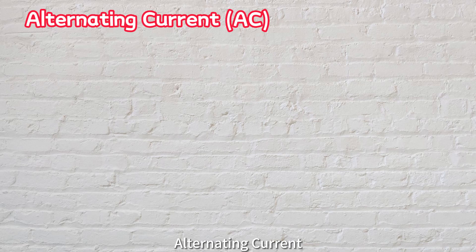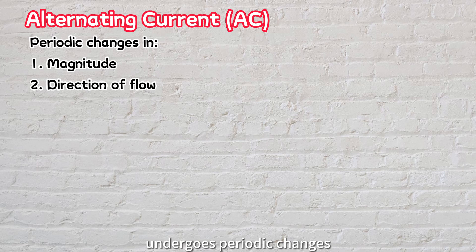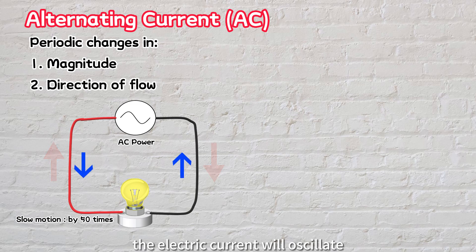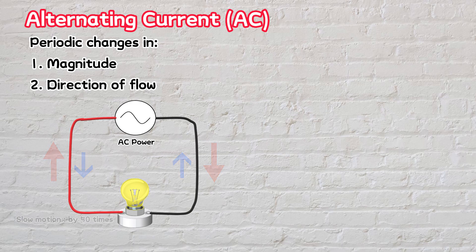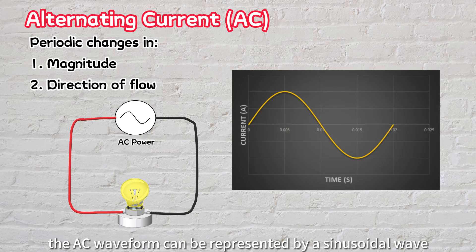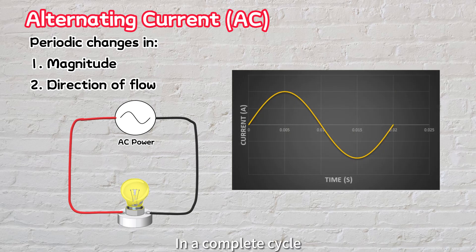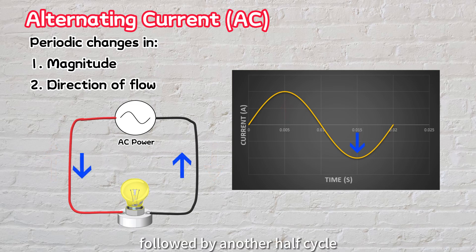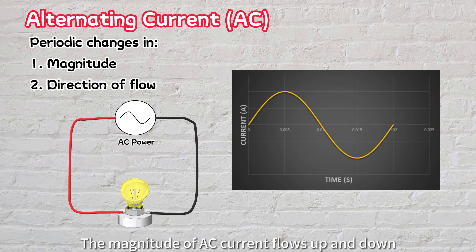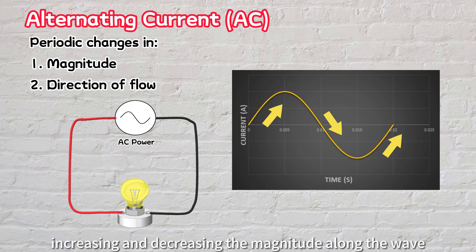AC, short for alternating current, refers to an electric current that undergoes periodic changes in both its magnitude and direction of flow. The electric current will oscillate, reversing its direction back and forth over time. The AC waveform can be represented by a sinusoidal wave. In a complete cycle, it consists of the first half cycle in the positive direction, followed by another half cycle in the negative direction. The magnitude of AC current flows up and down, increasing and decreasing along the wave.